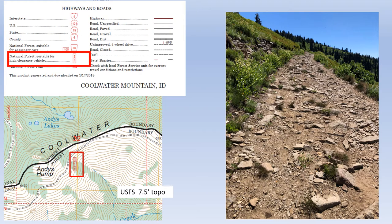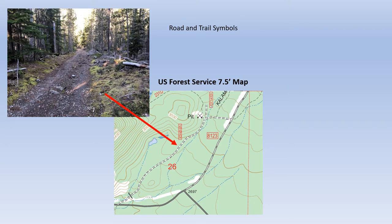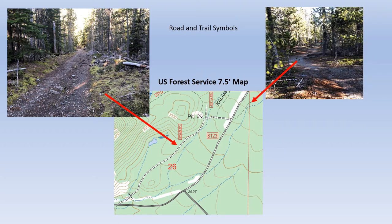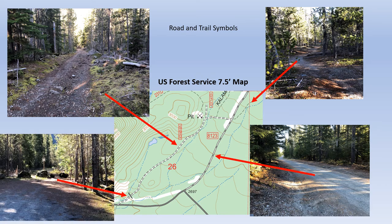Better have a high clearance vehicle for this road, and it's not a bad idea to check with the local forest service for current road conditions before you take off. Here are some examples of the relative differences between unimproved roads, trails, and improved gravel roads for the area covered by this map. Get out your maps, go for a drive, explore the types of roads and trails in your operating area, and don't miss the road barrier symbols.